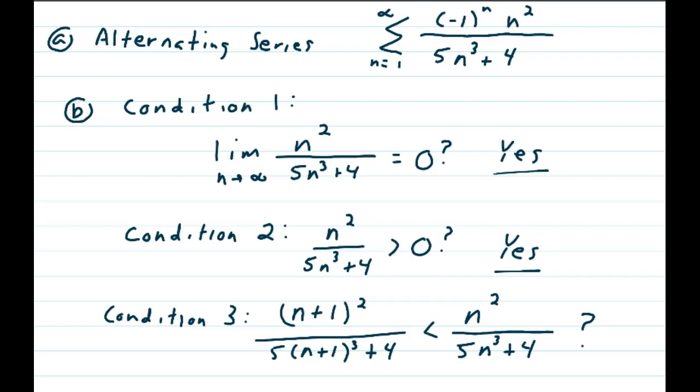Condition 3, on the other hand, is a little bit more difficult. We're going to check the n plus 1 term and compare it to the nth term and see if the n plus 1 term is smaller than the nth. So, taking your series, you're replacing n squared with n plus 1 squared. Down below, a little bit more complicated.